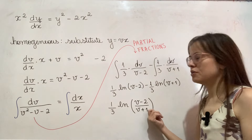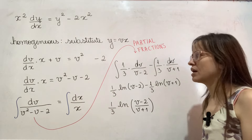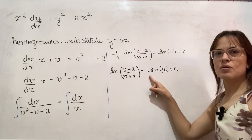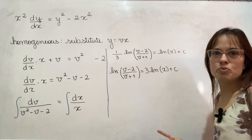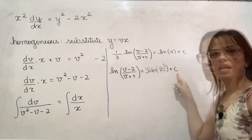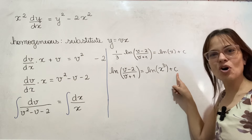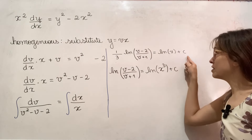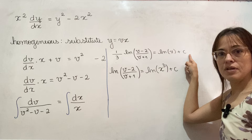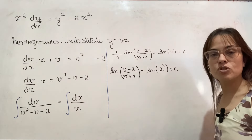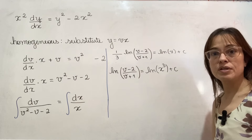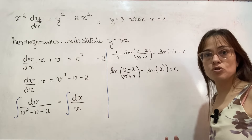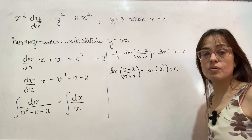Using the same log properties as before, I multiply both sides by 3 so the 3 gets inside the log and looks like x cubed, which is a little prettier than a cube root. And don't worry — I did not forget to multiply the c by 3. The c from this line is not the same c as the c from the next line, which is the same kind of renaming trick I discussed before. You're allowed to do this because you don't have the value of c yet — you'll find it at the very end.